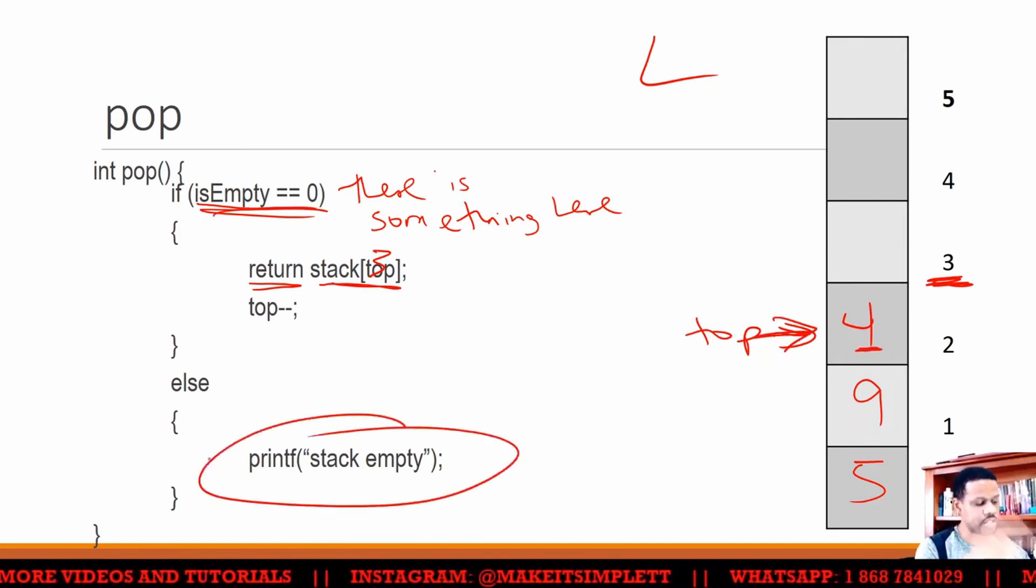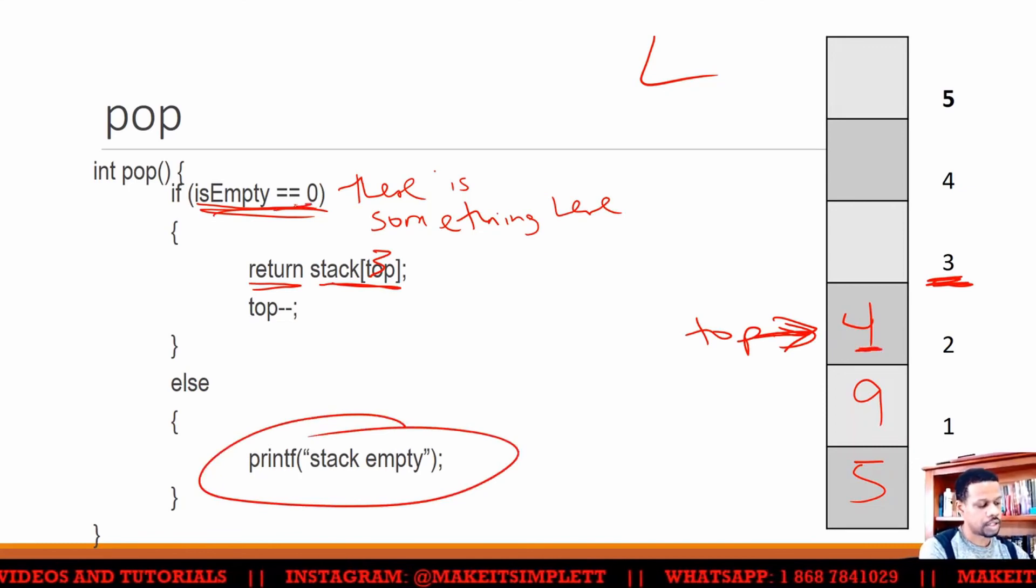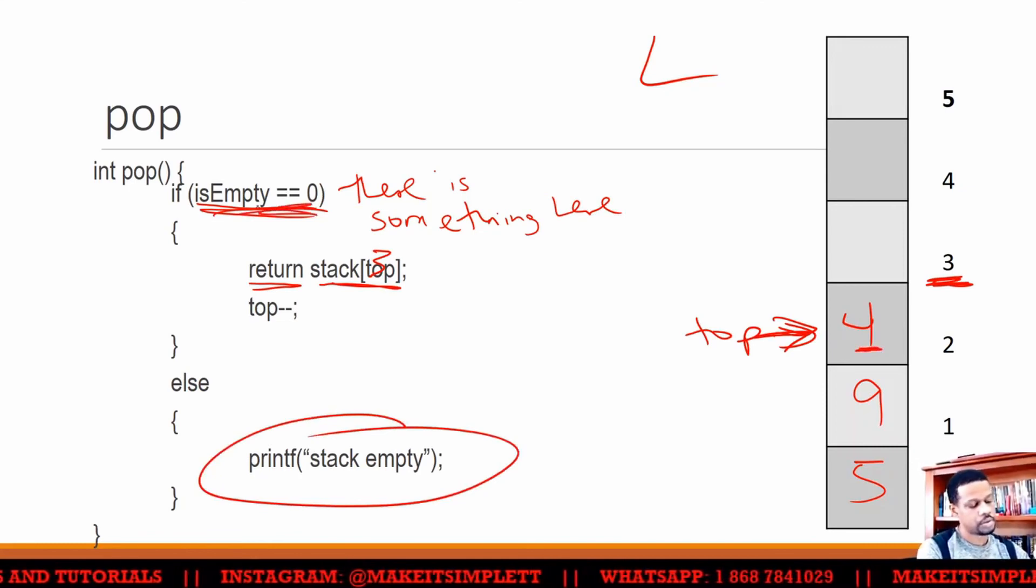If not, you print stack is empty because you didn't get a zero. You got a one. If you got a one, that means it's empty.